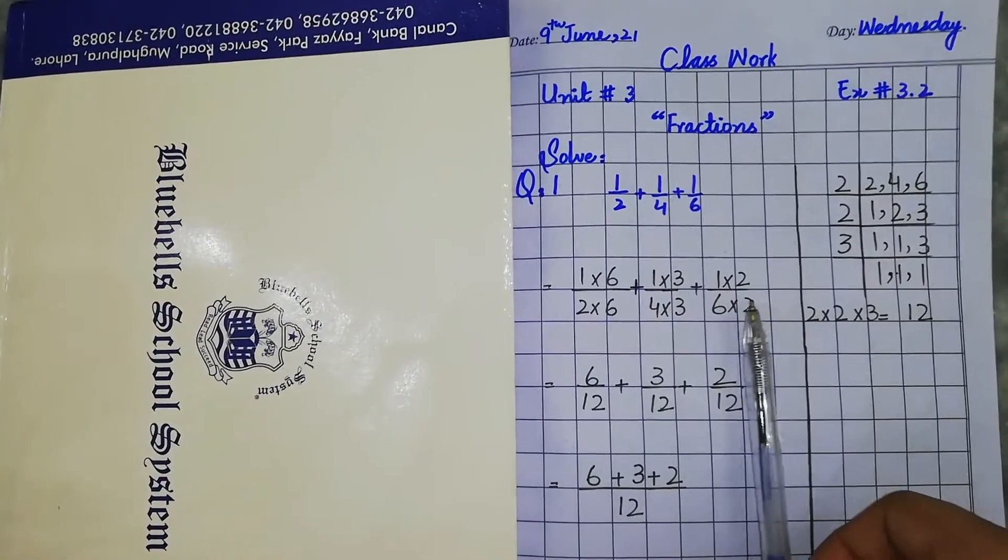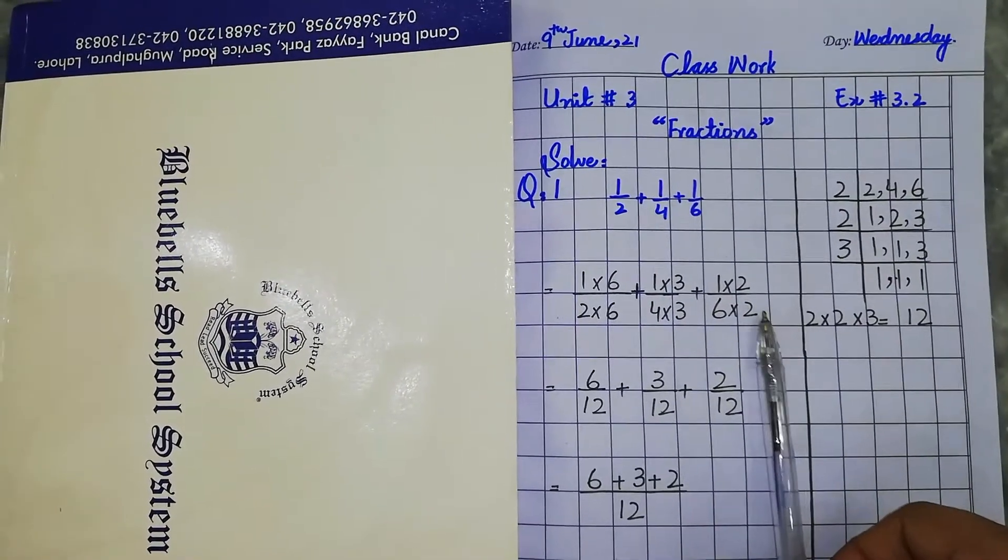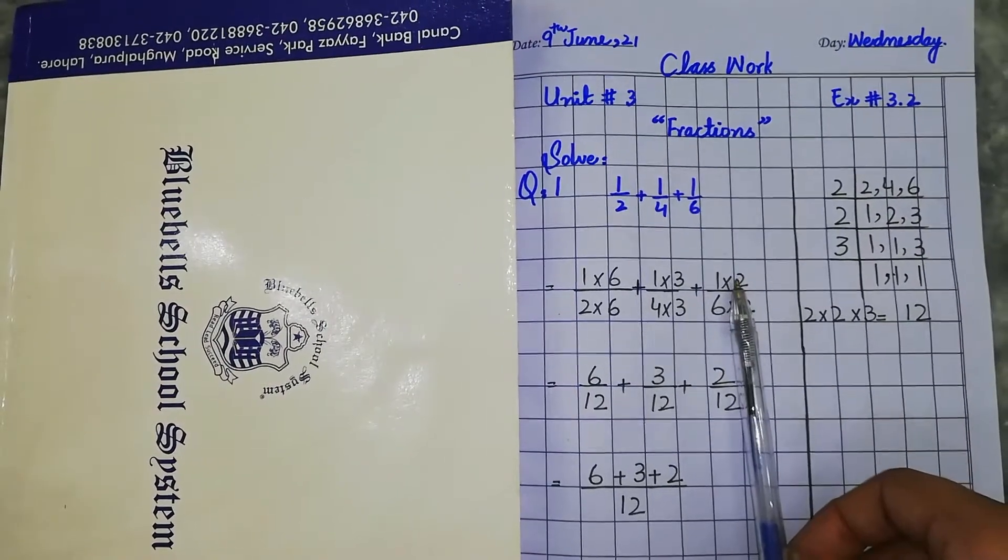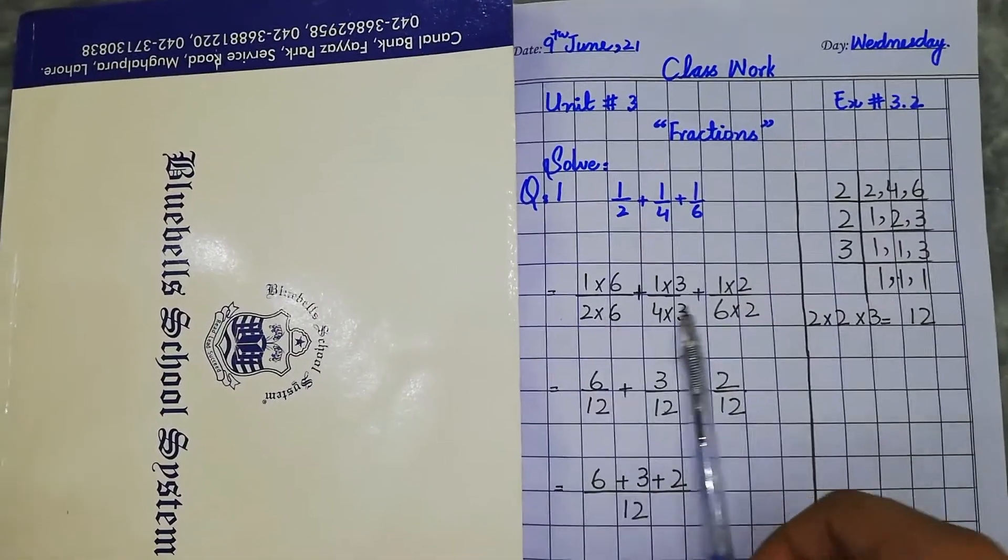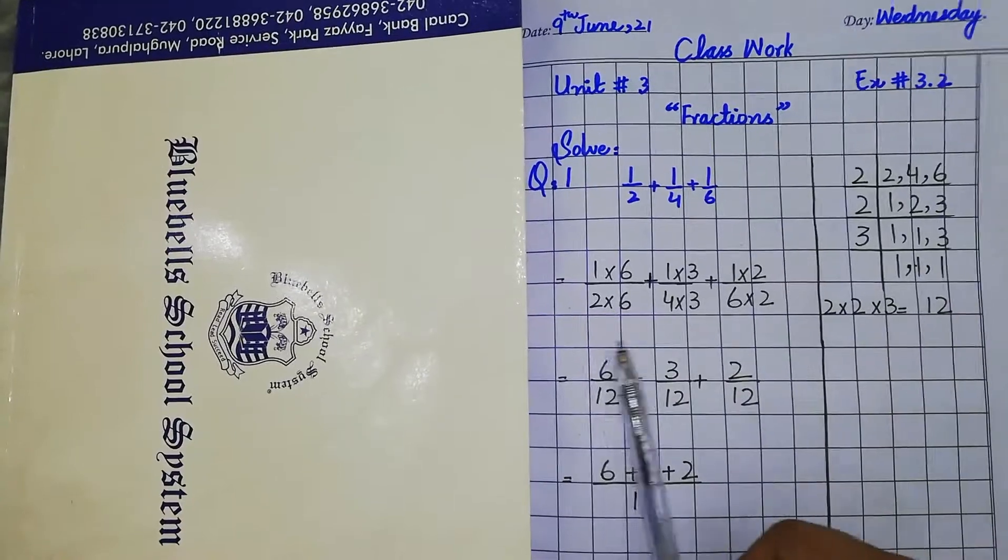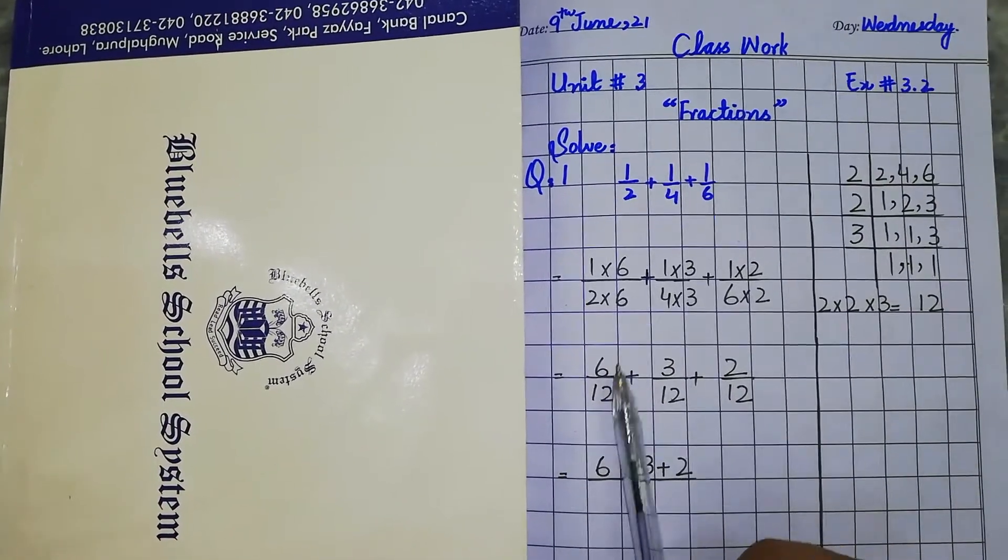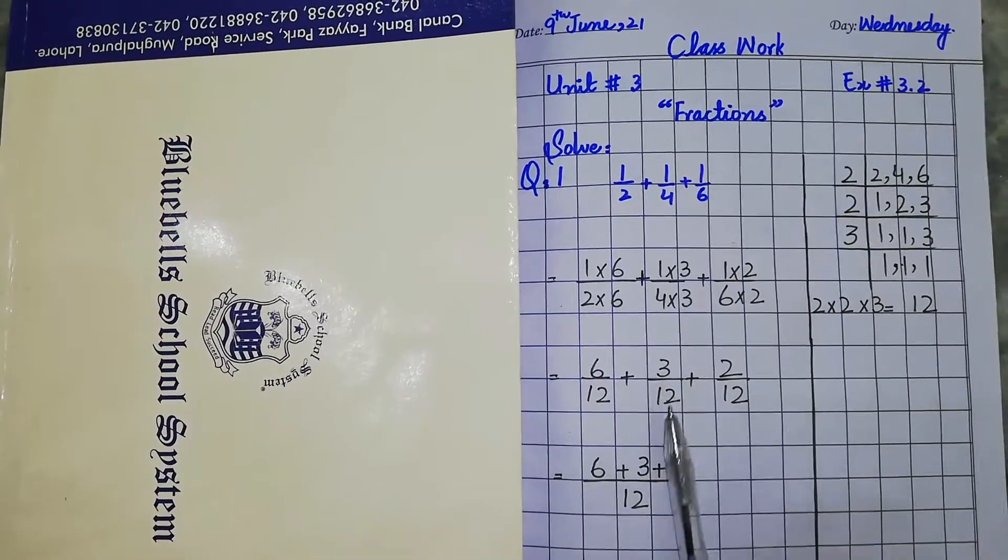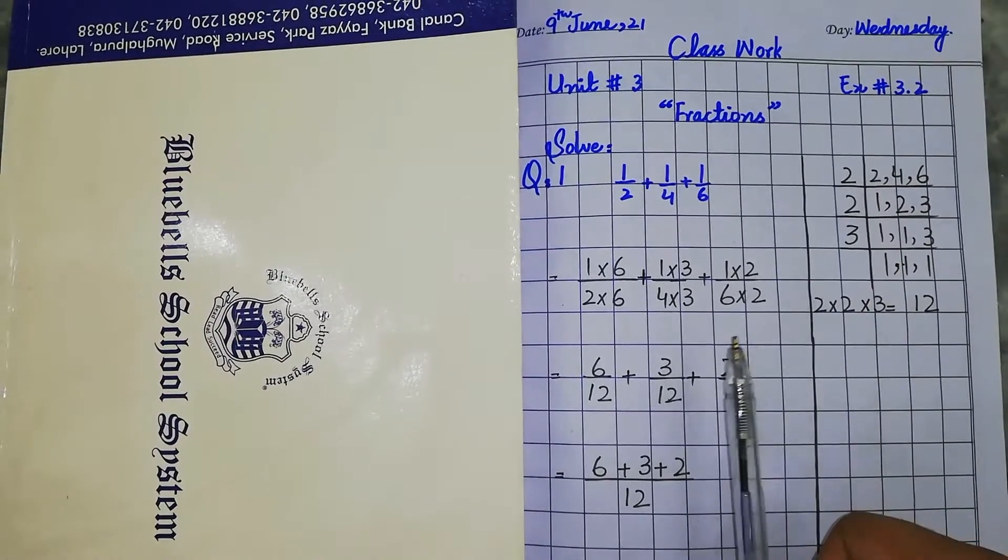For denominator 6, we multiply by 2: 6 times 2 equals 12, and we multiply the numerator by 2. After converting all fractions, we have 6 over 12 plus 3 over 12 plus 2 over 12.